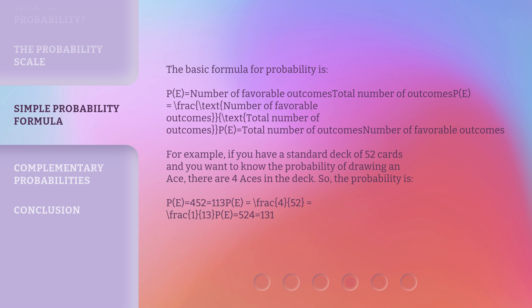For example, if you have a standard deck of 52 cards and you want to know the probability of drawing an ace, there are 4 aces in the deck. So, the probability is P(E) = 4/52 = 1/13.